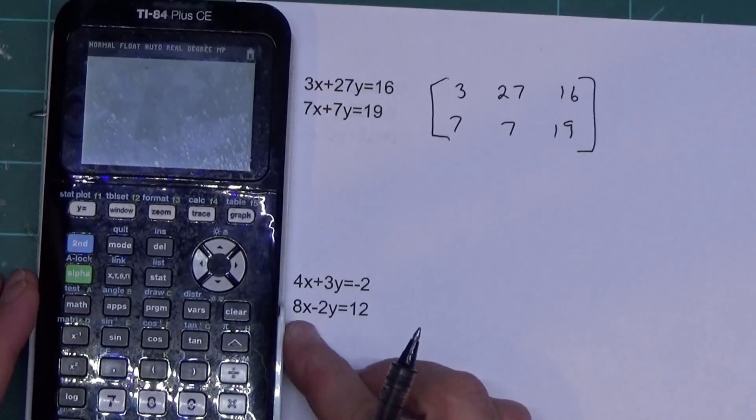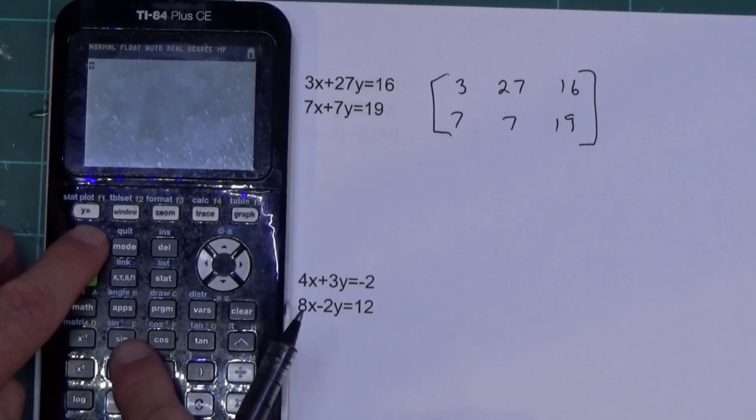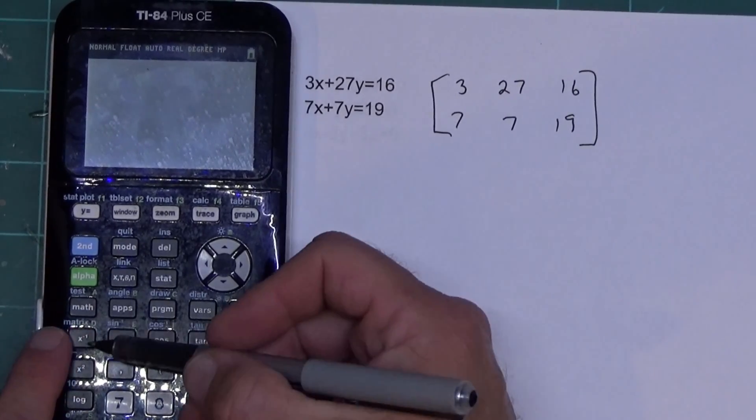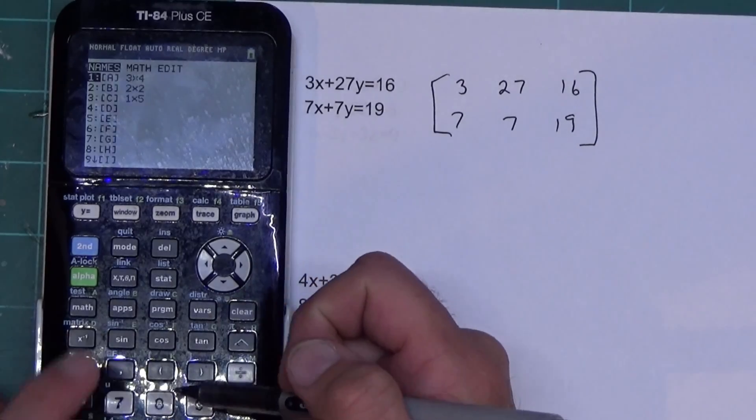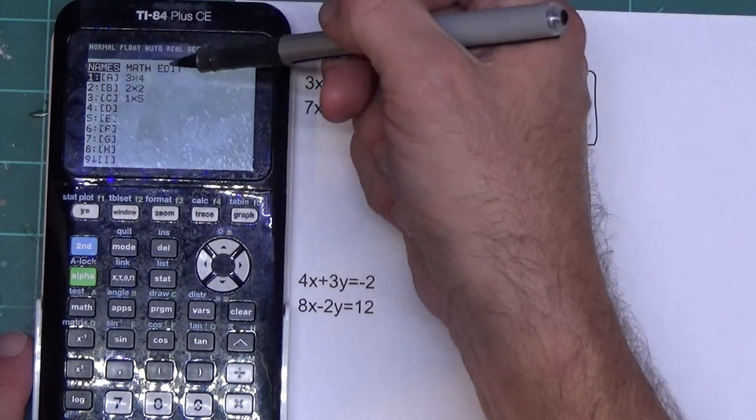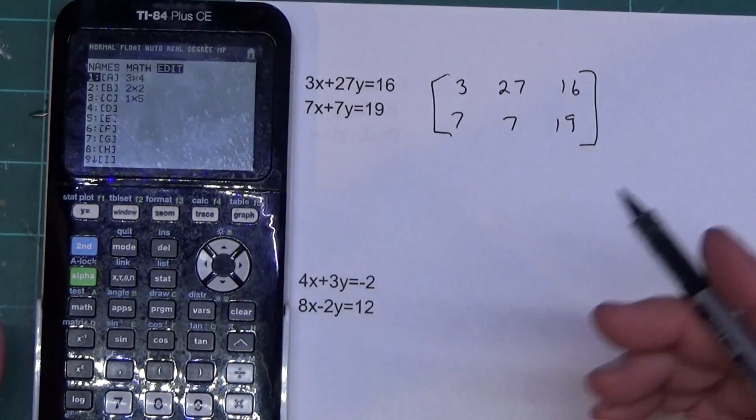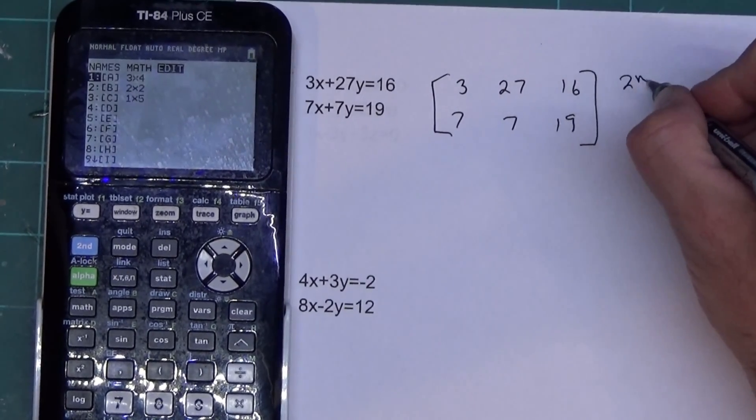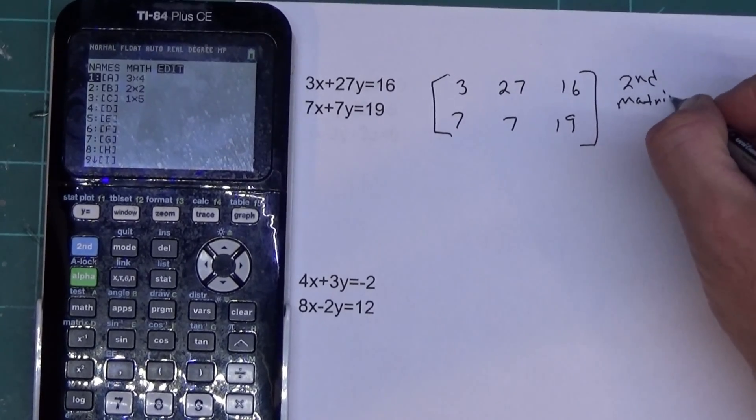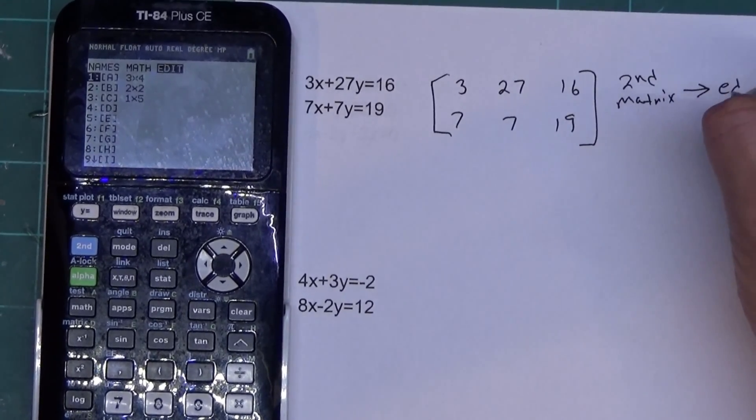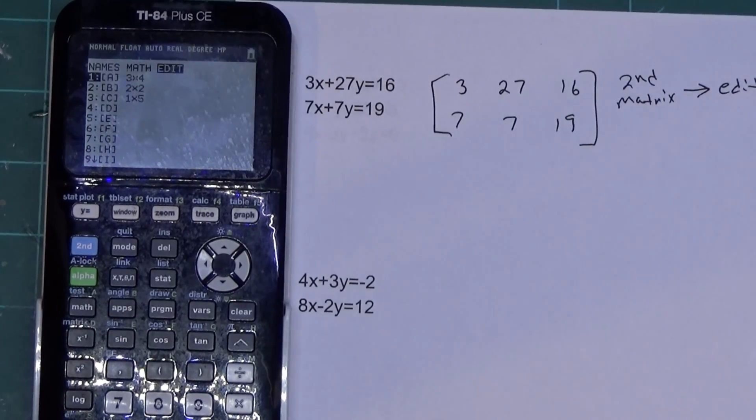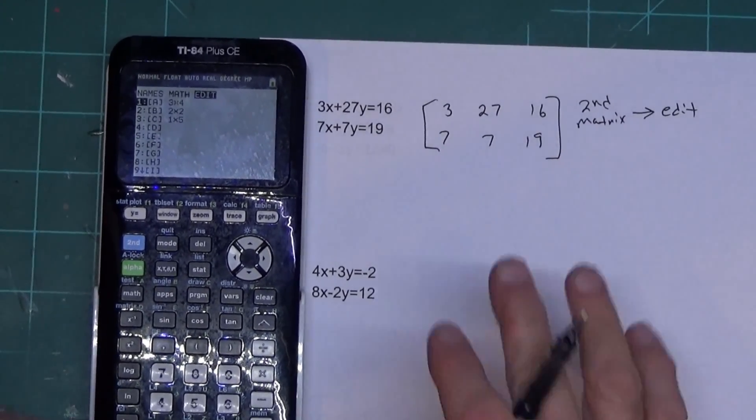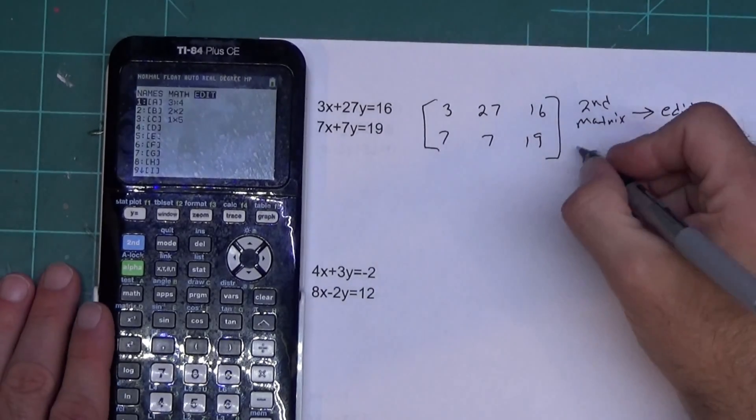To type that in the calculator, what you're going to do is hit second matrix. The matrix button is right above the X to the minus one. Then you see a screen of names, edit, math, and edit. We want to go over to edit. I'm going to zoom out just a little bit so we can see what I'm writing all the way across. Then we're going to press enter.